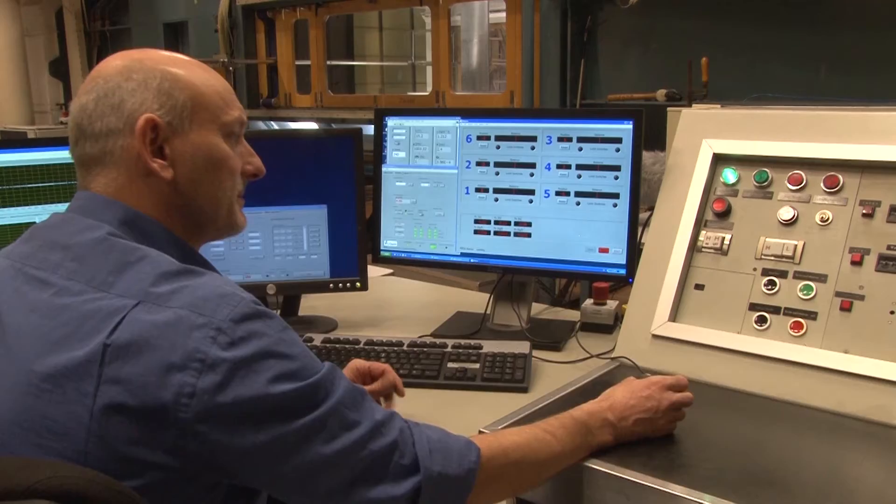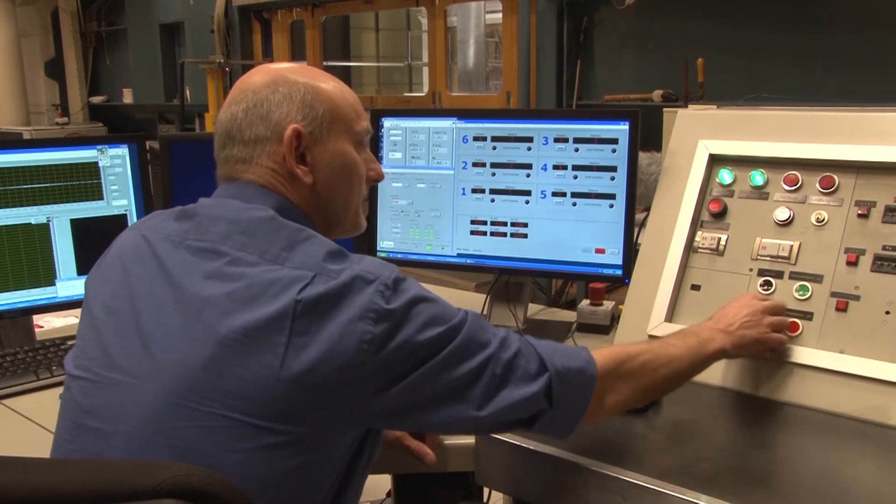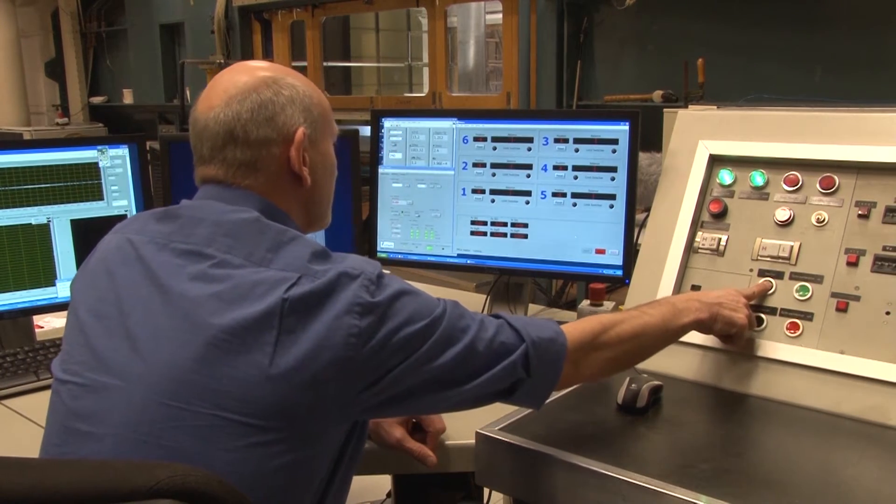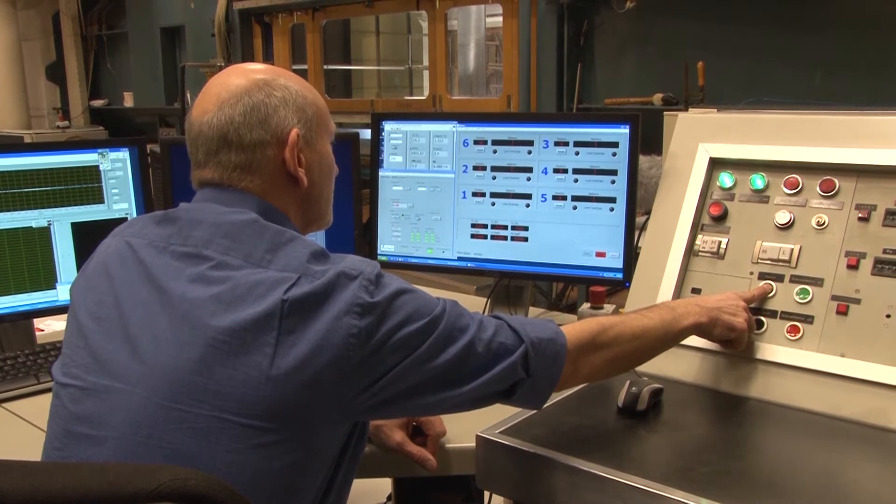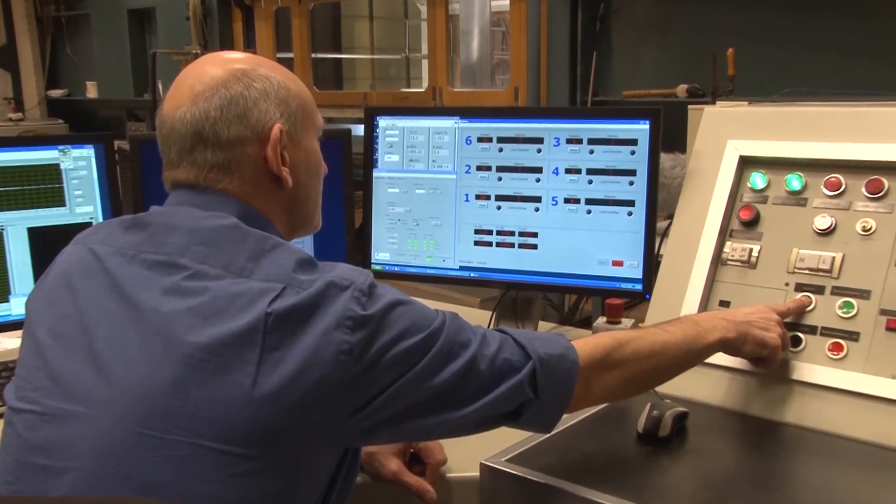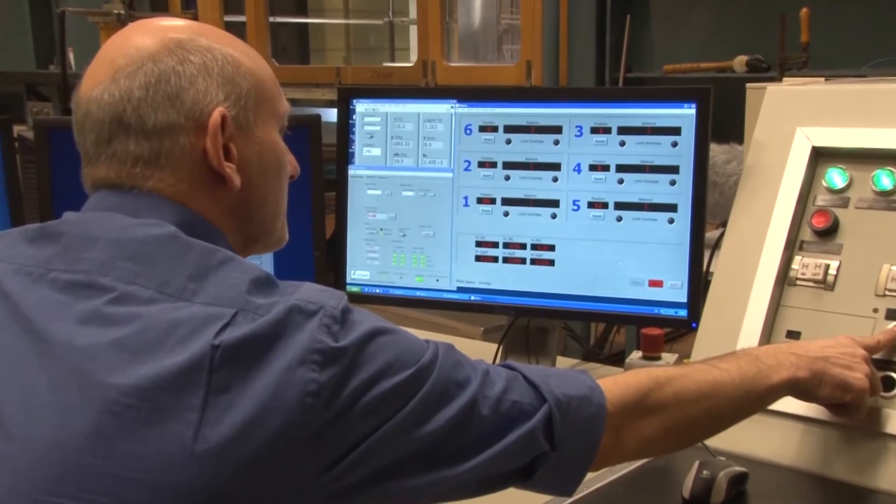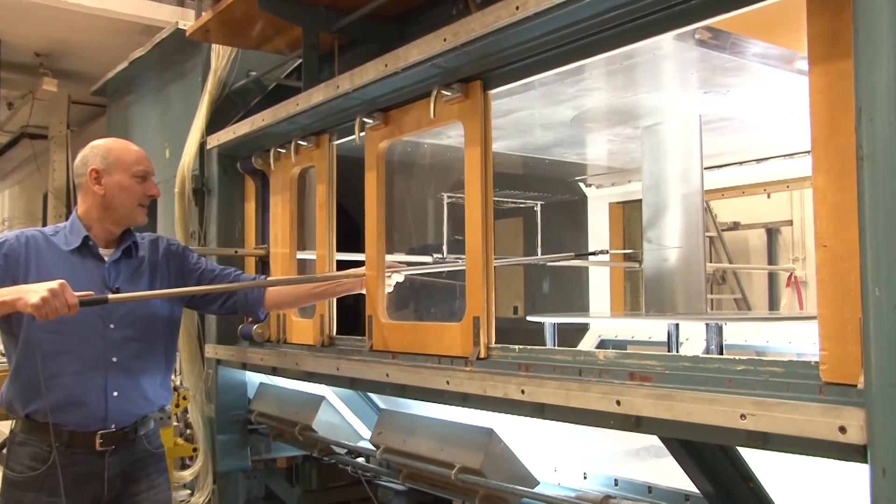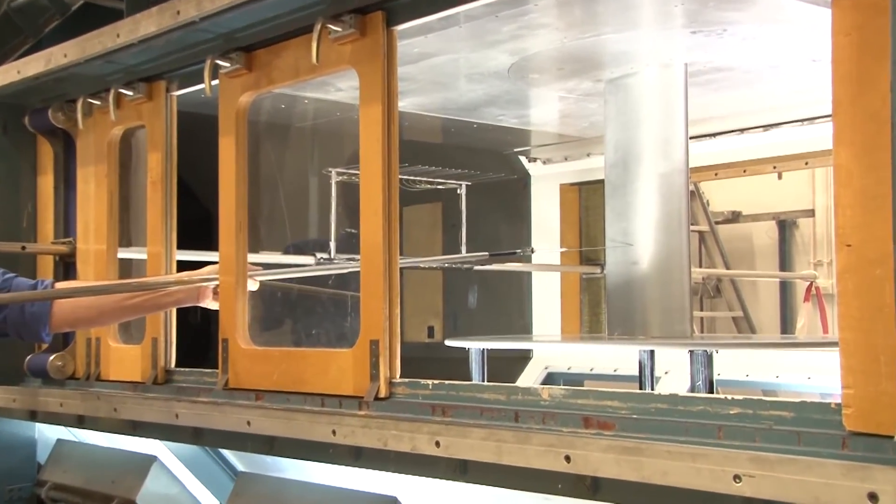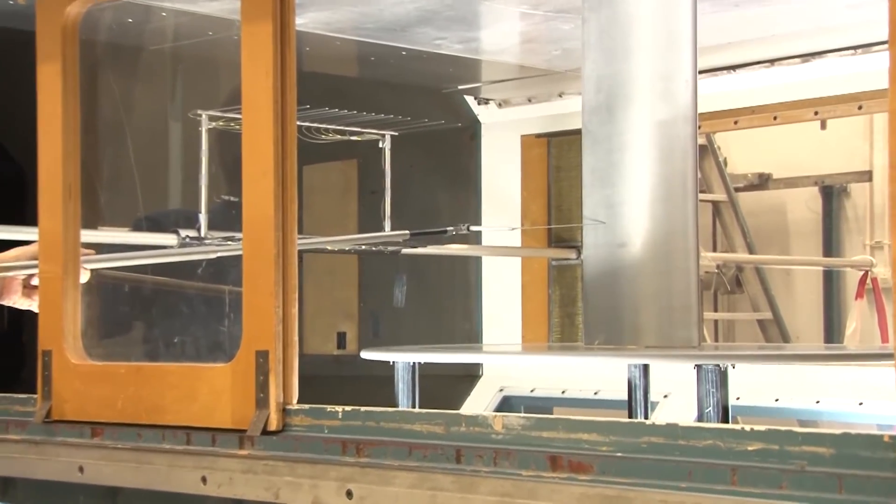So let's do that. We will first start up the wind tunnel at zero angle of attack at a relatively low speed, so that we can hear the sound of the boundary layer. It is a laminar airfoil. At this wind speed the transition location is at about 70% of the chord.